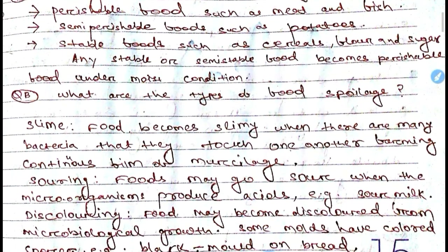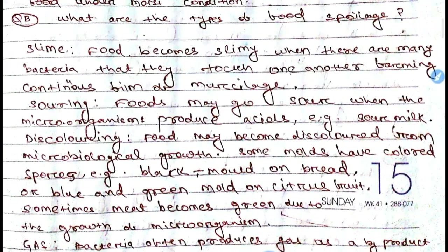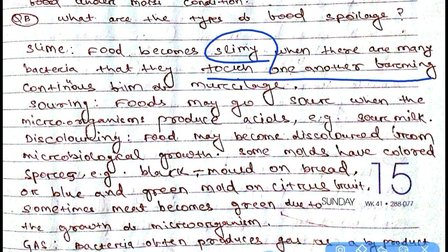Food goes through different kinds of spoilage. First is slime. Food becomes slimy when there are many bacteria that touch one another, forming a continuous film. Bacteria firmly attach to each other and develop a slimy appearance and touch because of their mucilaginous film.